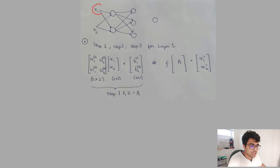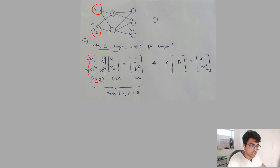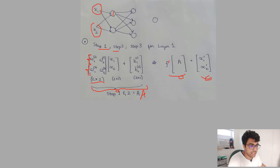Let's walk through an example to understand what's happening in a neural network. We have inputs x1 and x2. The weights from all neurons form a 2×2 weight matrix, which we multiply by the 2×1 input vector, yielding a 2×1 result. We then add the respective neuron biases, giving us vector a. We apply activation function f(a) and get outputs x1' and x2'.